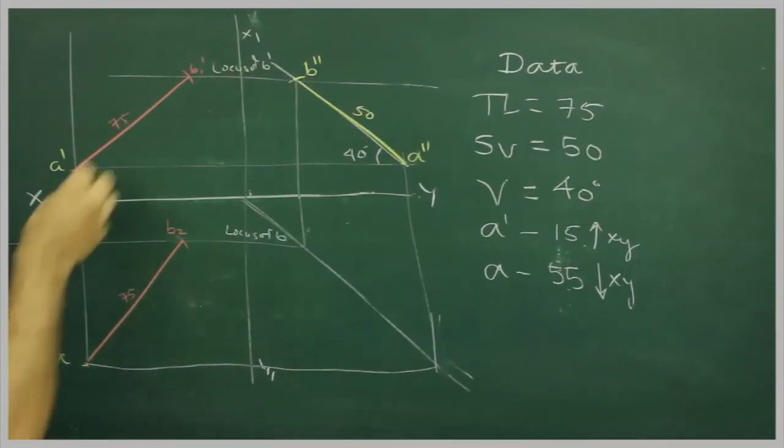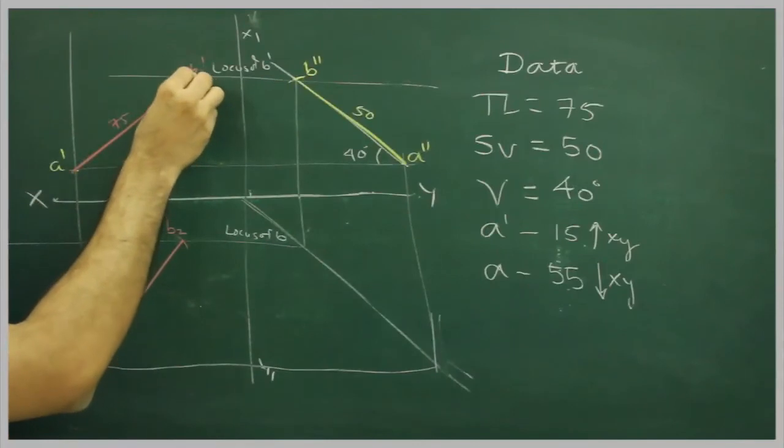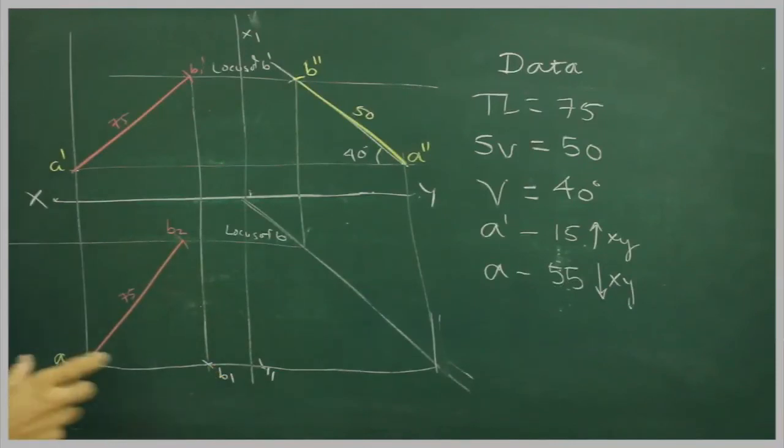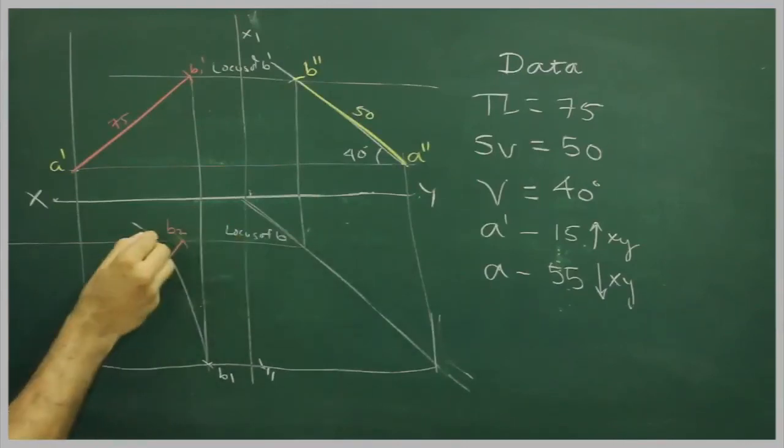Now we have B one dash and B two. So we know that B one dash project till A, you will get B one. Then you take A to B one and you rotate. So when you rotate, wherever it will cut locus of B, that would be point B.